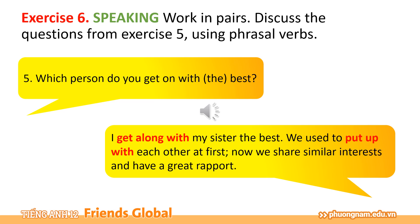And lastly, number 5: 'Which person do you get on with the best?' — I get along with my sister the best. We used to put up with each other at first, but now we share similar interests and have a great rapport. Tôi rất thân với chị của tôi. Chúng tôi thường phải chịu đựng nhau rất nhiều lúc đầu, nhưng bây giờ chúng tôi đã có những sở thích chung và có một tình gắn kết rất bền chặt. Các bạn có thể thấy những câu trả lời sử dụng những cụm phrasal verb sẽ làm cho phần nói thêm thú vị và cuốn hút hơn.